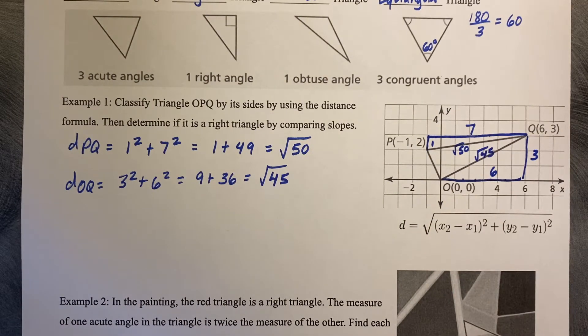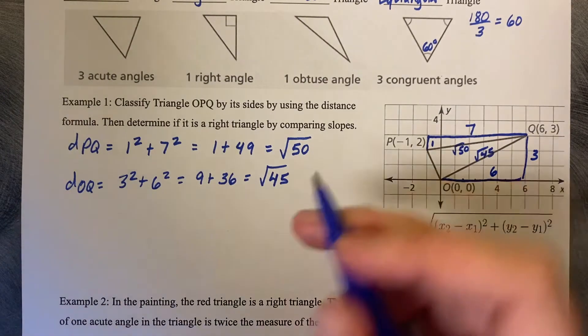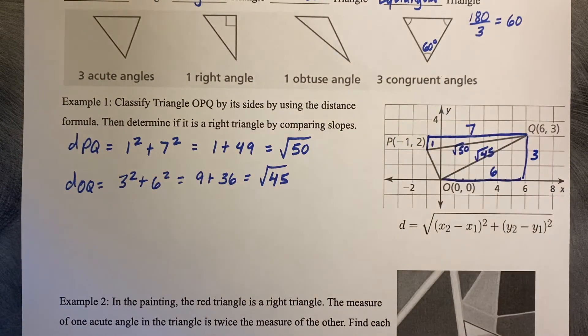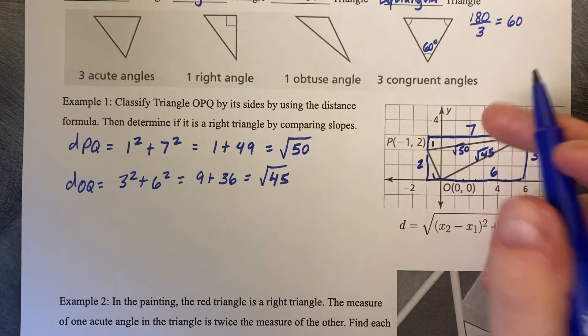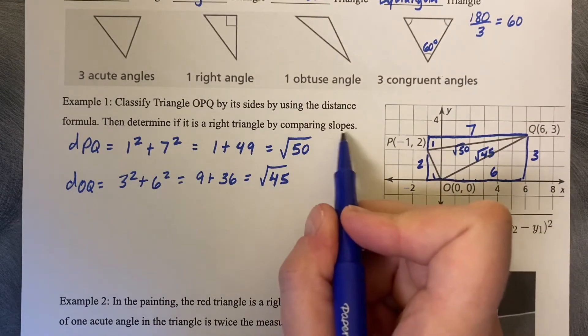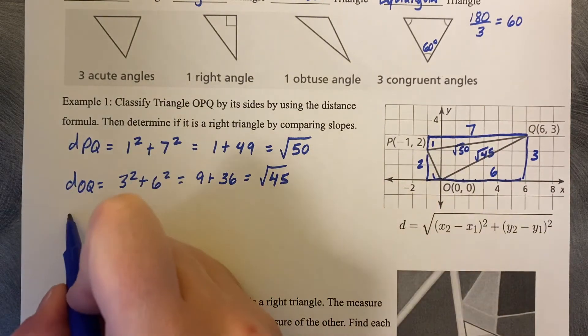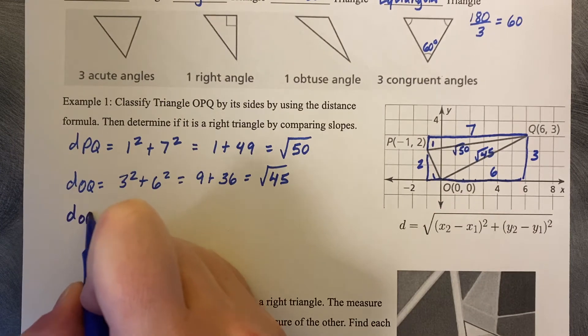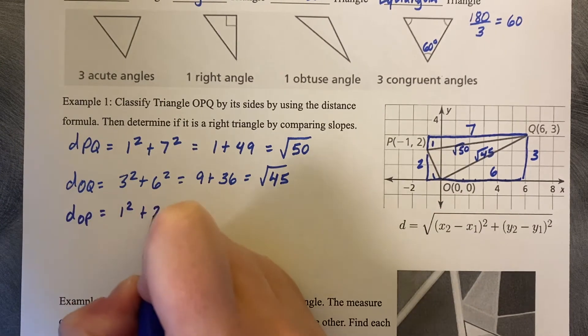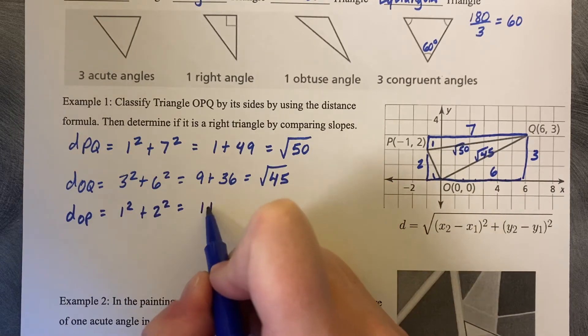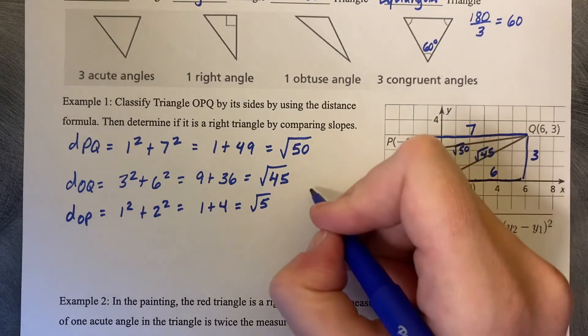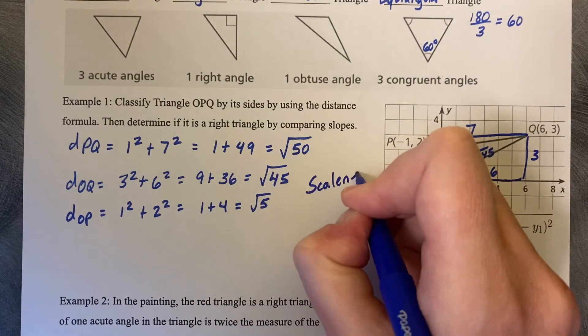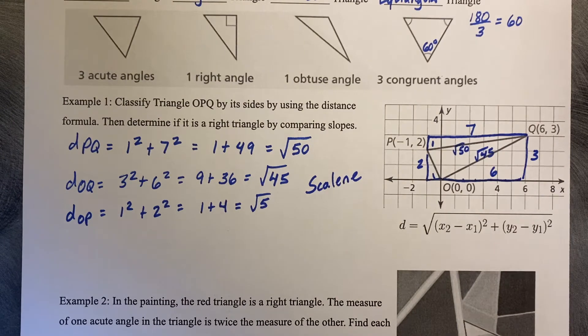So I can tell that this is going to be a scalene triangle. If they had been the same, if it had been the square root of 50 and the square root of 50, it would have been isosceles. So the last one we need to do is OP. So it's a rise of two and a run of one negative in this case. So then the distance from OP is going to be one squared plus two squared, one plus four square root of five. So I can tell that this is a scalene triangle. None of the sides are the same length.